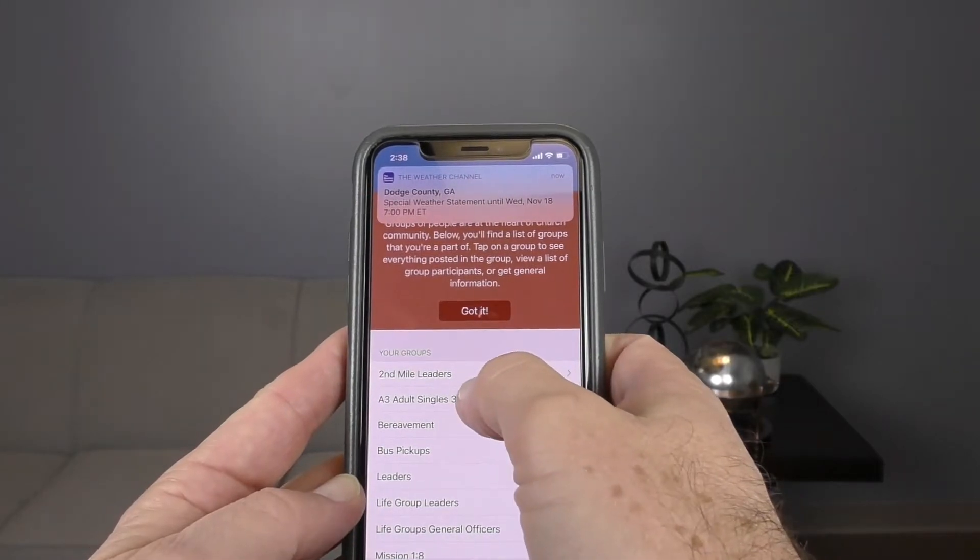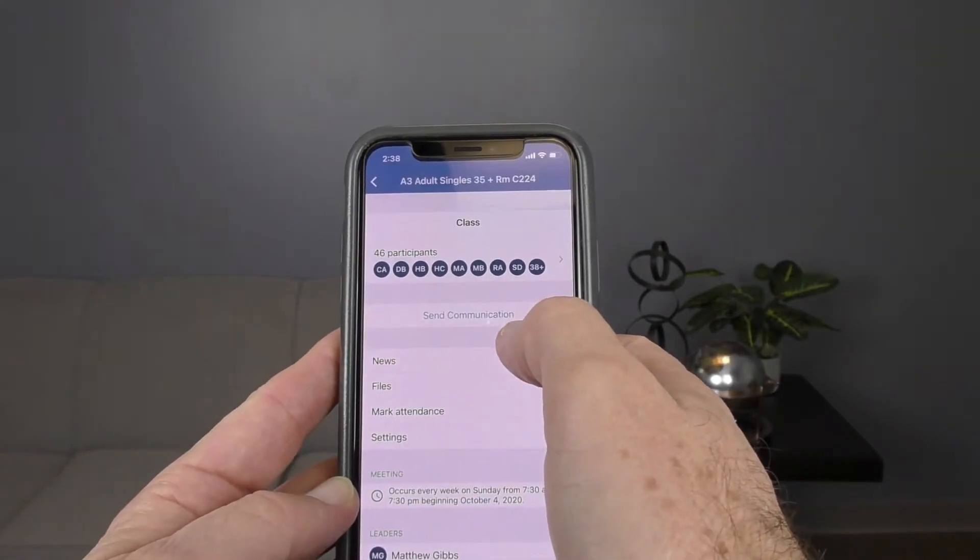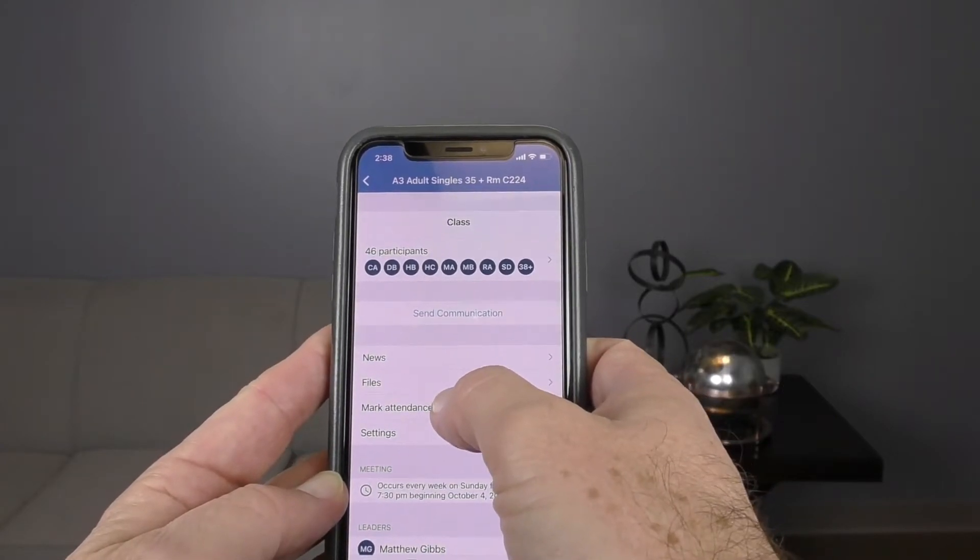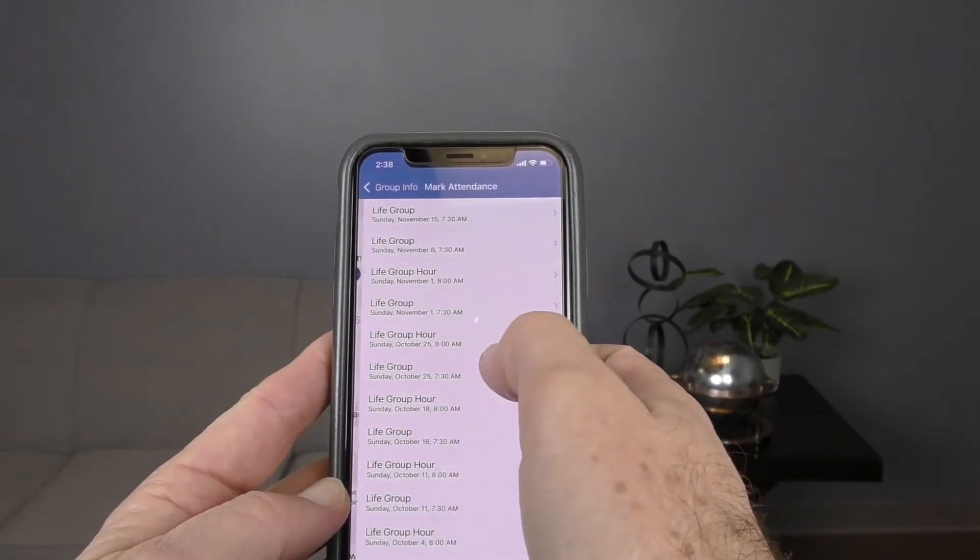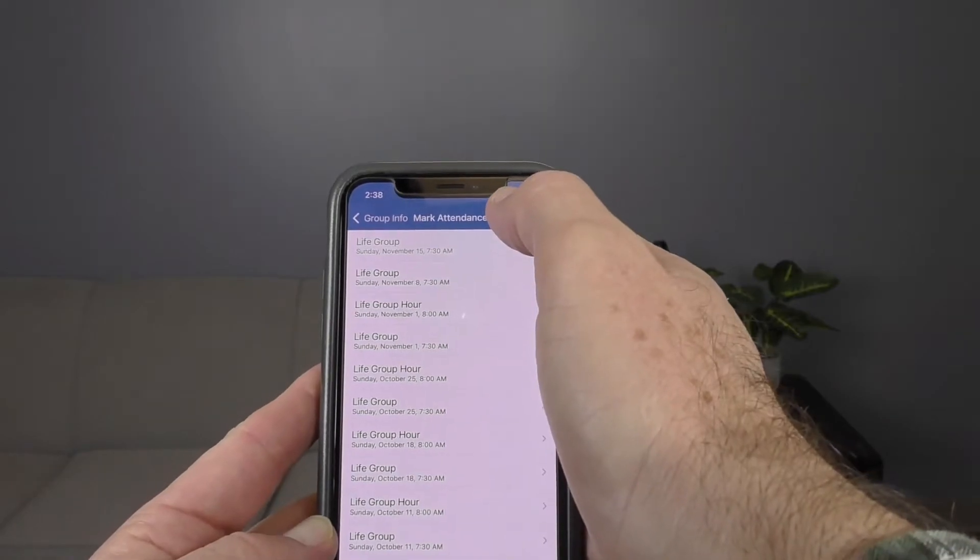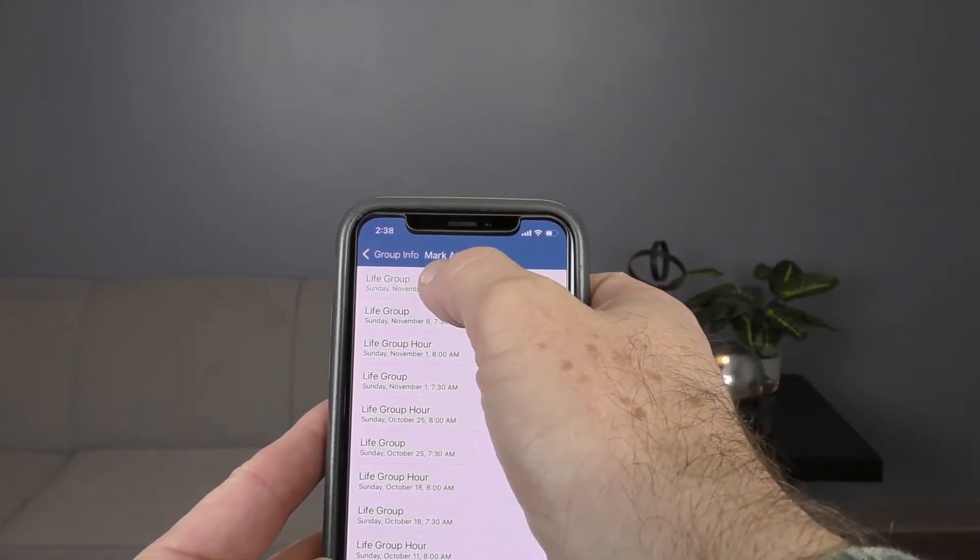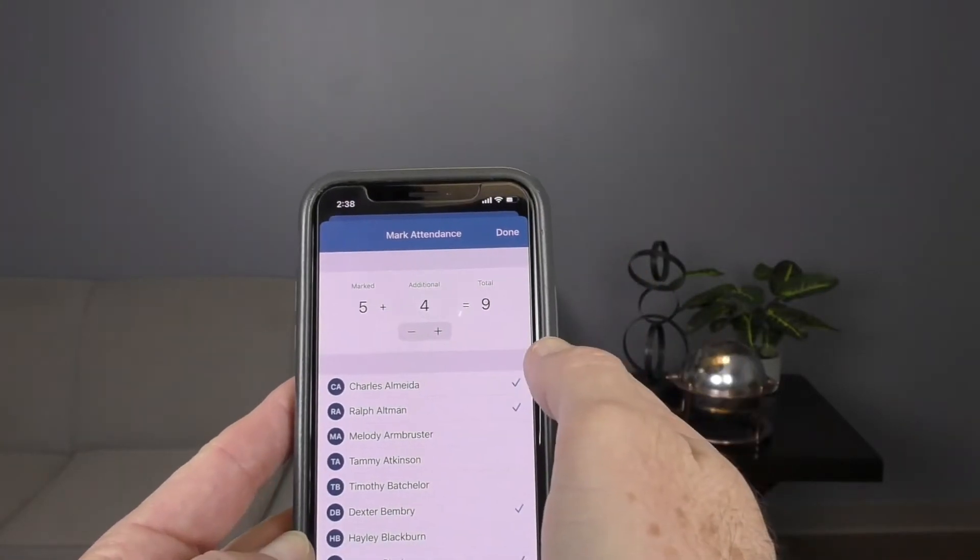You'll notice all the groups that I'm a part of are on this list. Then I'm going to choose my life group, which is Adult Singles. Right here it says 'mark attendance,' so I'm going to choose that.